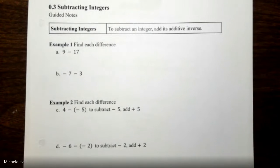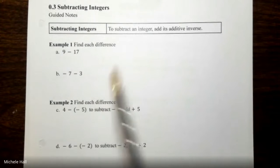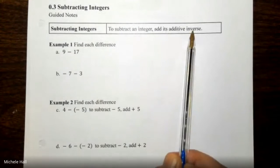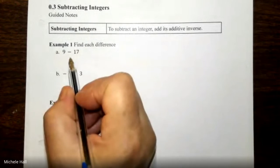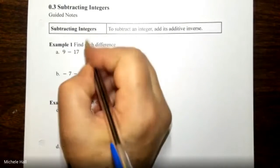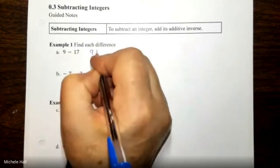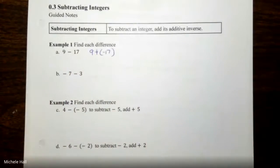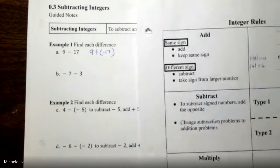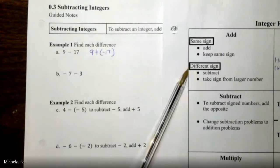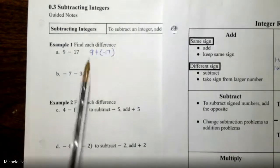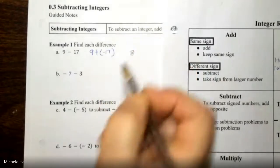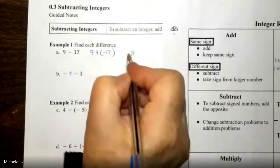Subtracting integers: to subtract an integer, add its additive inverse. To subtract, we change this to an addition problem: 9 plus negative 17. We're adding a positive and a negative — different signs — so we subtract and take the sign from the larger number. 17 minus 9 is 8, and we take the sign from 17, giving us negative 8.